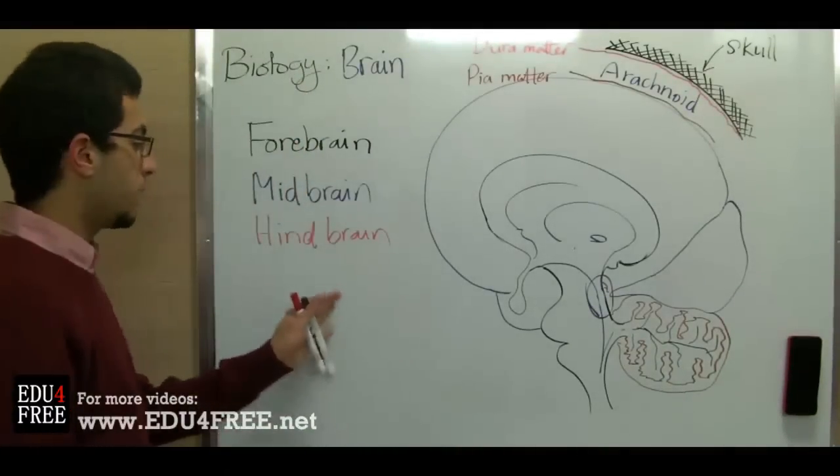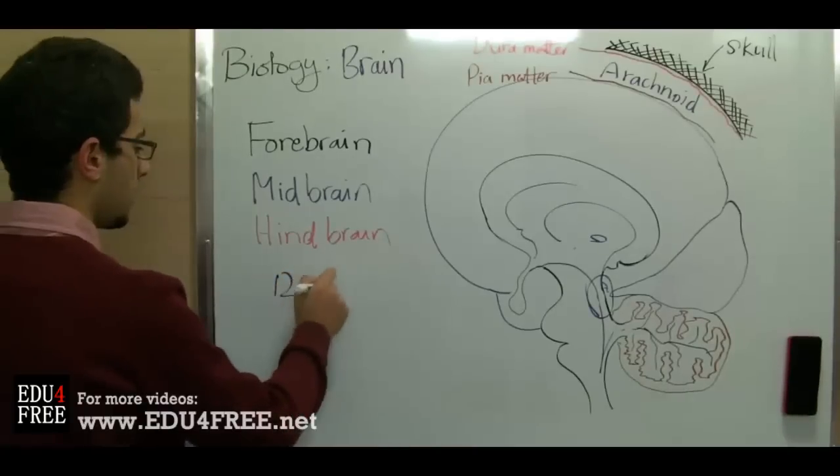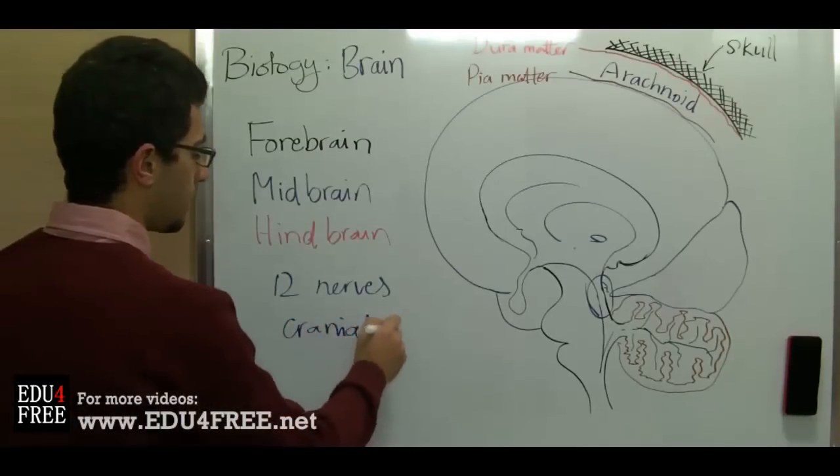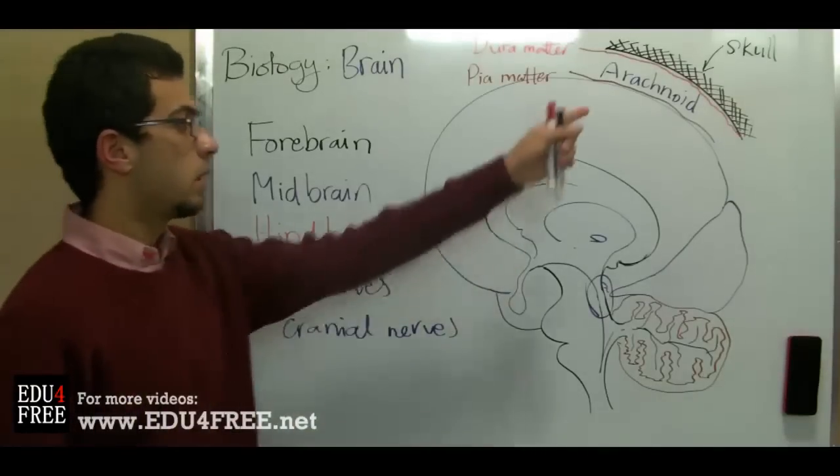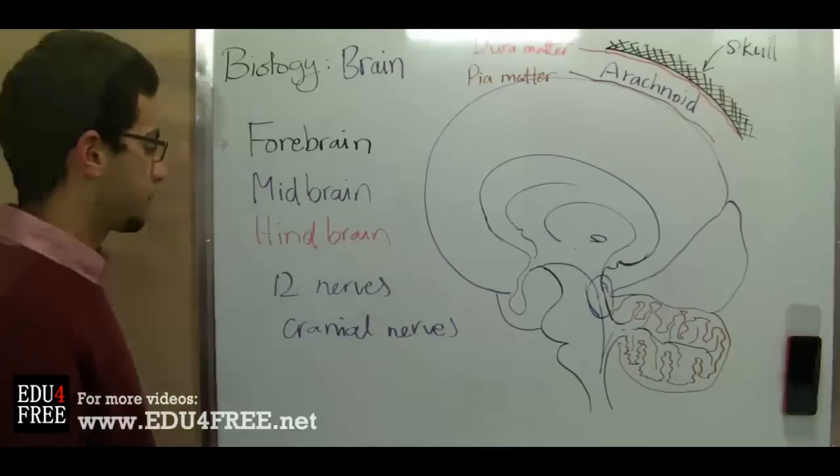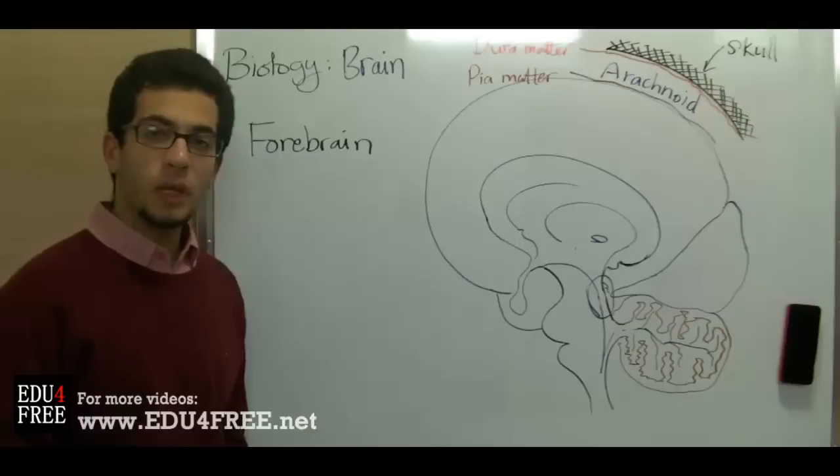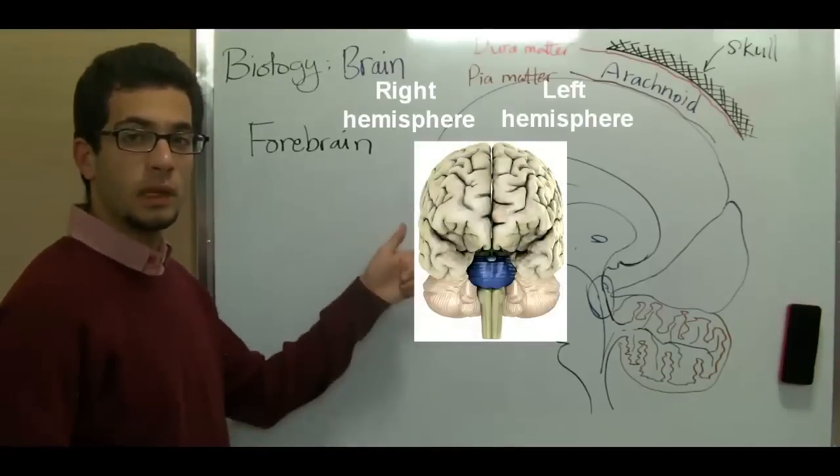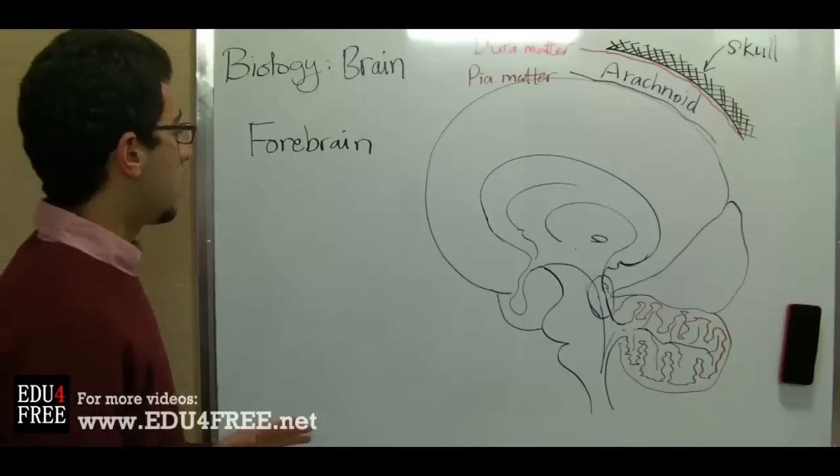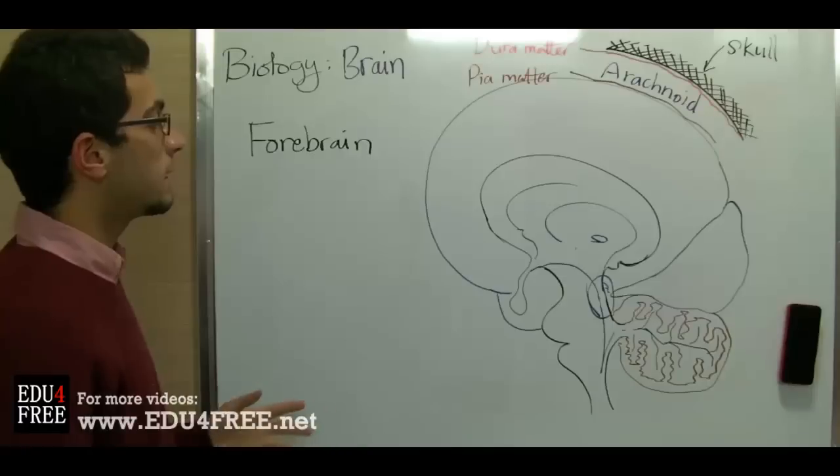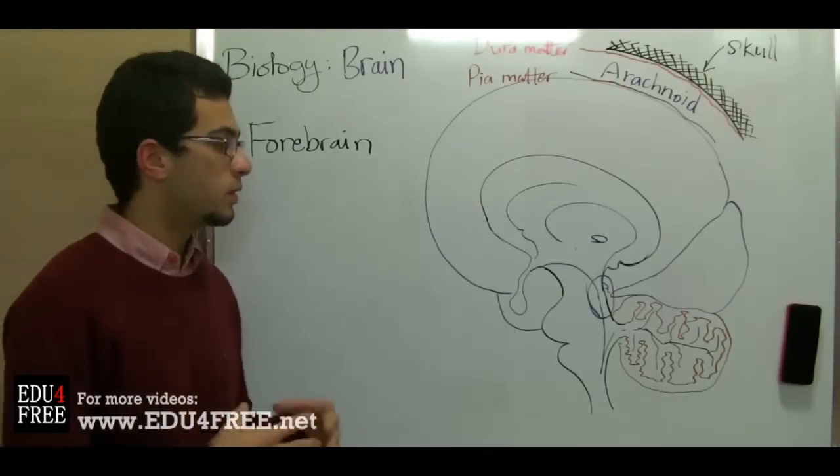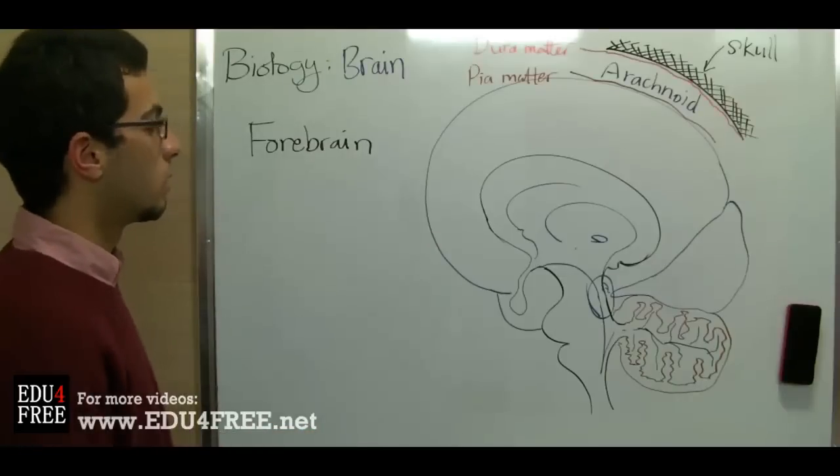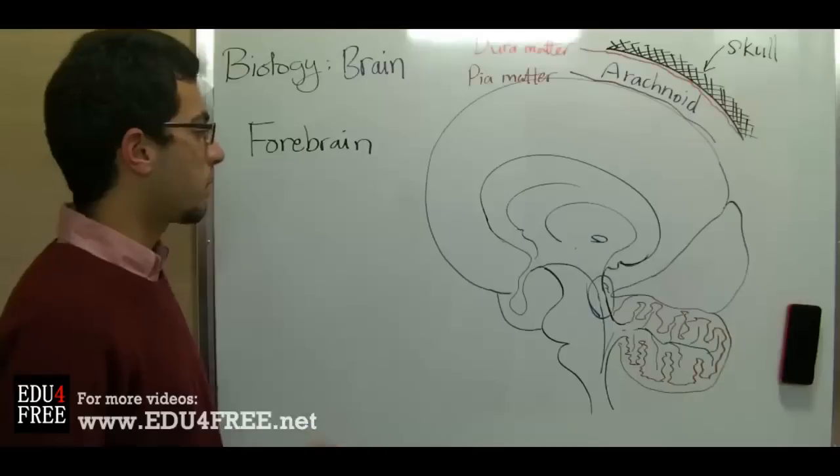We have to know that there are 12 nerves which come out from the brain, and these are called cranial nerves, referring to the cranium or skull where the brain is found. The forebrain consists of two big lobes separated by a big fissure. The two lobes are separated by a big fissure and they are connected together by a big nerve bundle. Each one of the two lobes is called a cerebral hemisphere.